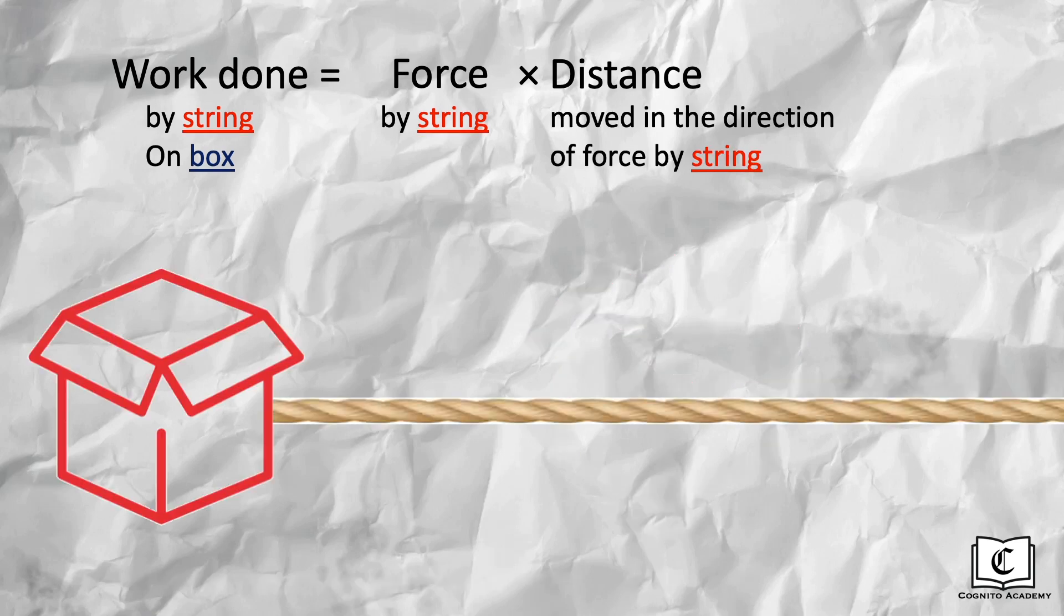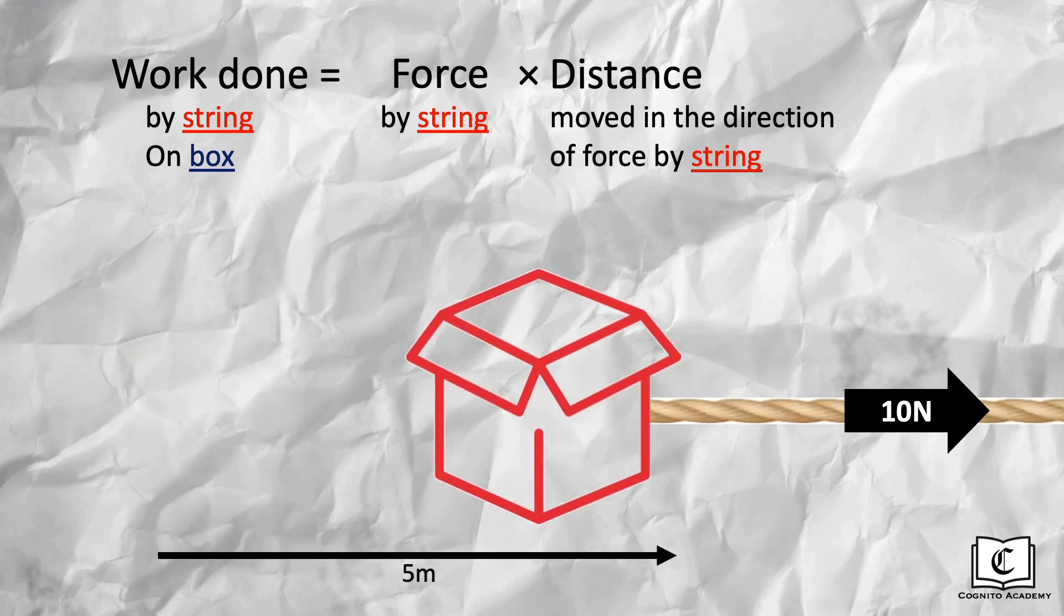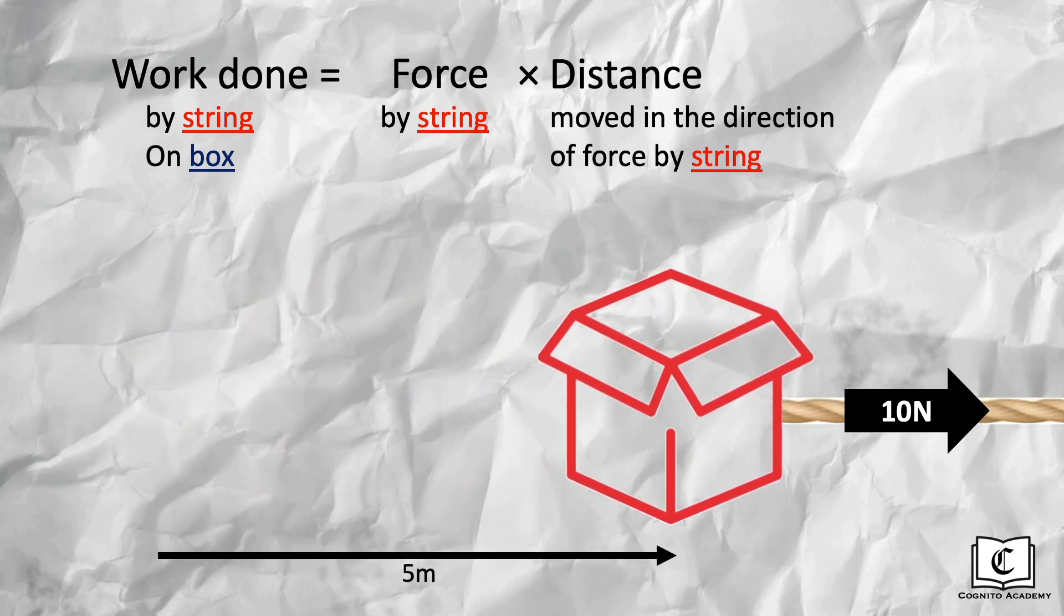In yet another scenario, presuming a frictionless surface, with only the string pulling the box with a force of 10N towards the right, with the box only moving to the right for a distance of 5 meters, what will the work done by the string on the box be?